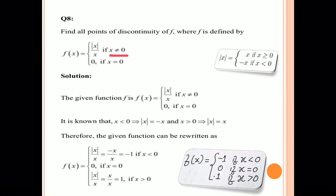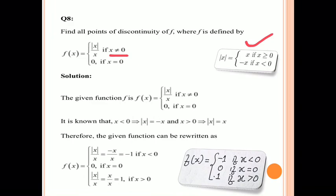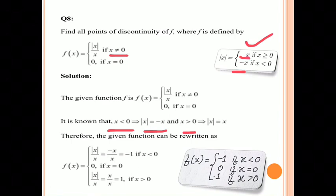Let us recall the modulus function. Mod of x is equal to x if x is greater than or equal to 0, and mod of x is minus x if x is less than 0. So when x is less than 0, mod of x is minus x; and when x is greater than 0, mod of x is x.